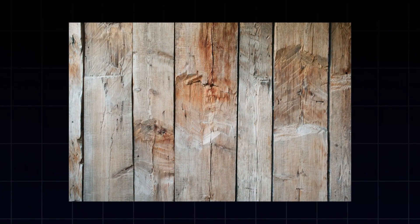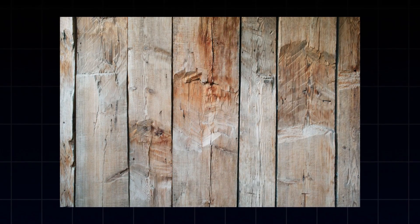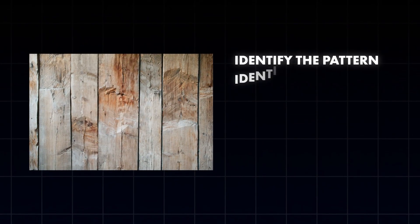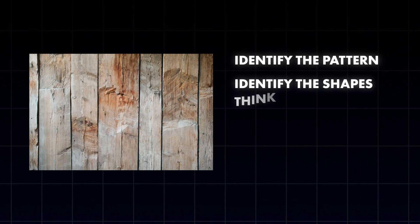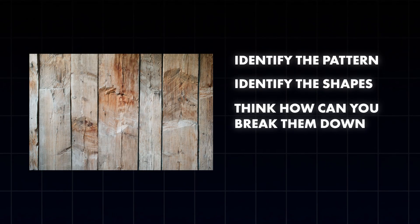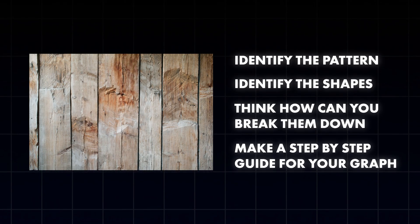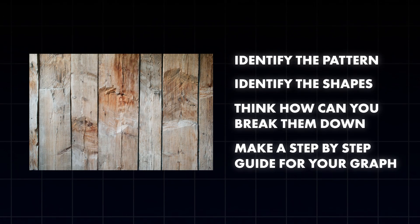When you gather your reference, plan every single thing you want to add to your material and save an image that gives you a visual reference of each specific detail. Start by identifying the pattern: what are the different shapes it holds, and how can you break them down? Follow this for every single part of your material, and once you have that, draw a step-by-step guide of what you will create first in your graph. The biggest problem has the easiest solution — it's not a problem with the software, it's a problem with how you prepare yourself to make new materials.